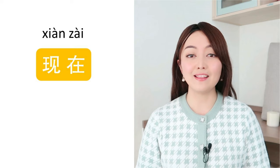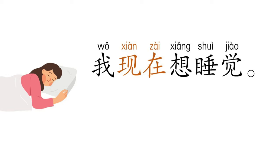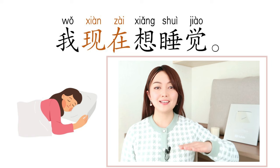现在. 我现在想睡觉 means 'I want to sleep now.' 我 is 'I', 现在 is 'now', 想 means 'to want', 睡觉 means 'to sleep.' So literally: I, now, want to sleep. 我现在想睡觉.